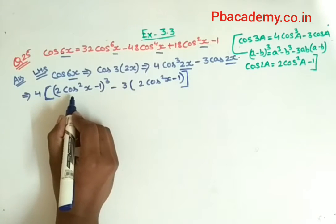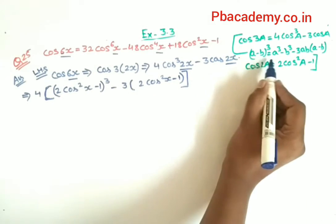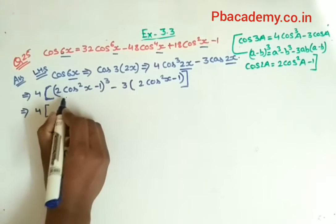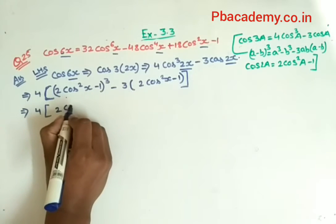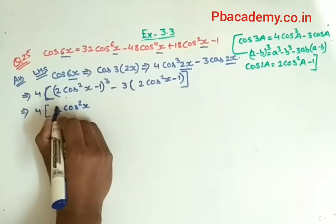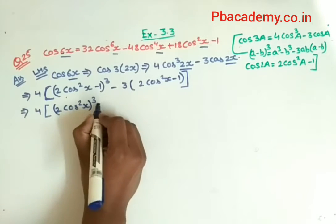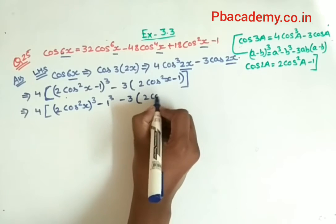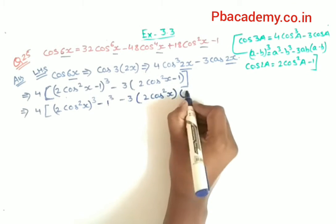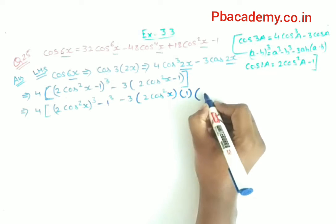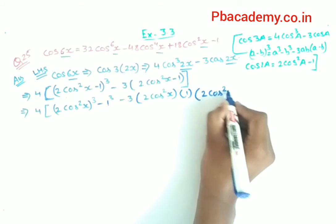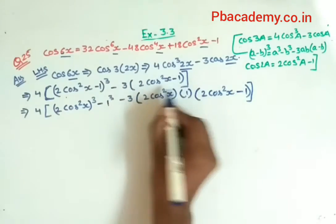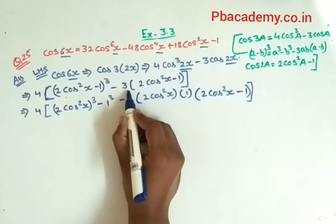We will apply the algebraic identity (a − b)³ here. So it will become: a³, that is (2 cos²x)³, minus b³, that is 1 cubed, minus 3ab(a − b), where a = 2 cos²x and b = 1. So the bracket becomes (2 cos²x − 1), and the remaining term as it is continues forward. We will solve this together.